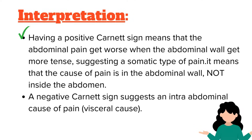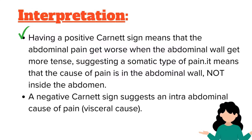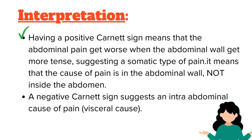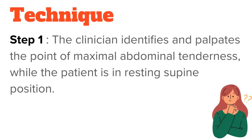Interpretation: Having a positive Carnett's sign means the abdominal pain gets worse when the abdominal wall gets more tense, suggesting a somatic type of pain. This means the cause of pain is in the abdominal wall, not inside the abdomen. A negative Carnett's sign suggests an intra-abdominal, visceral cause of pain.